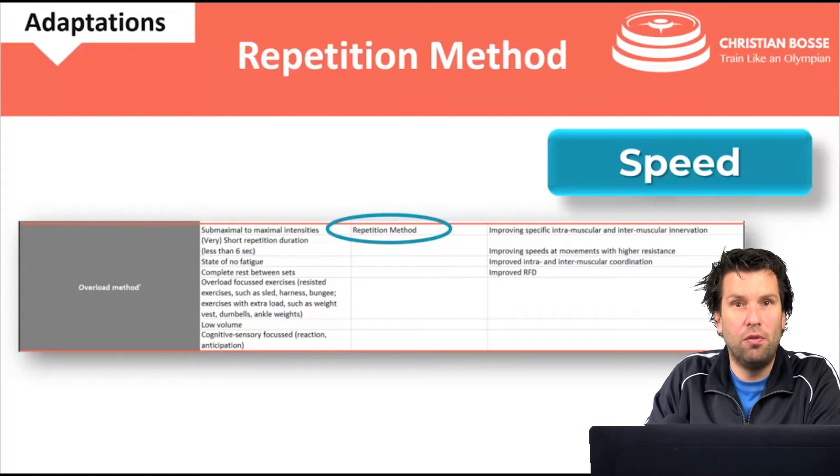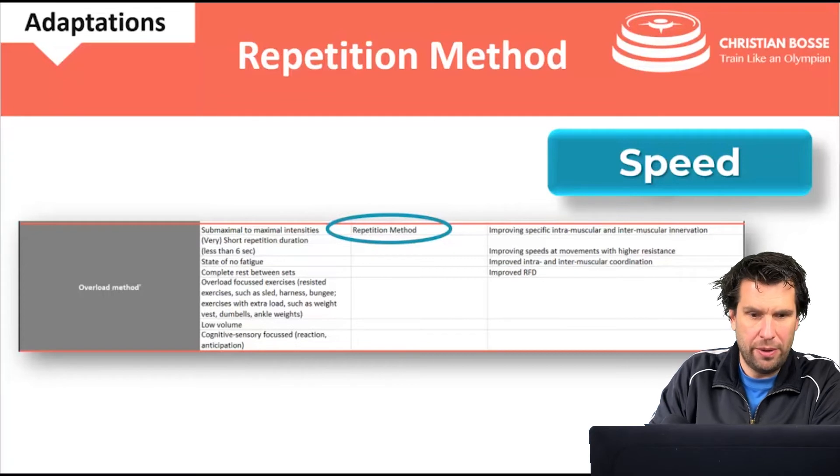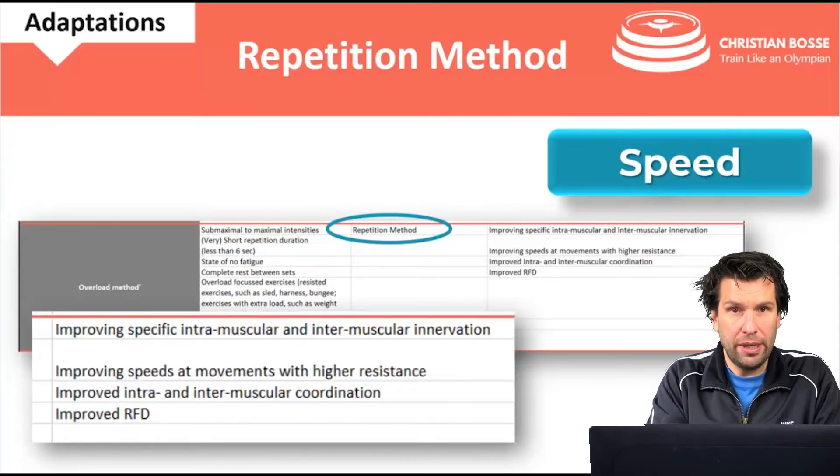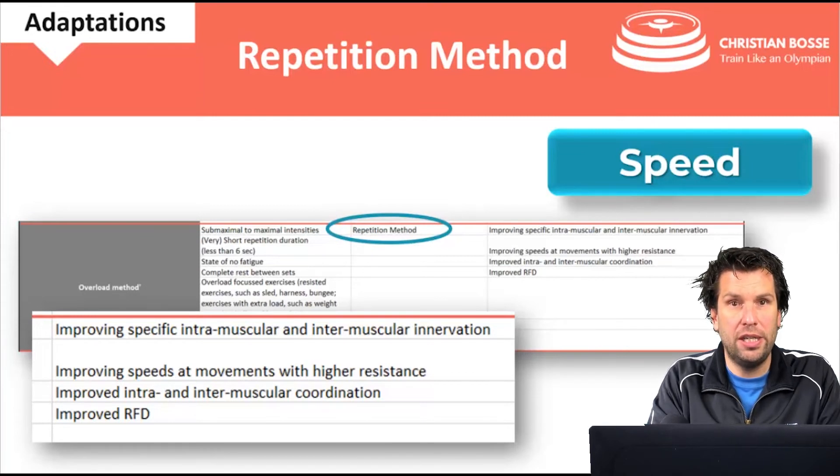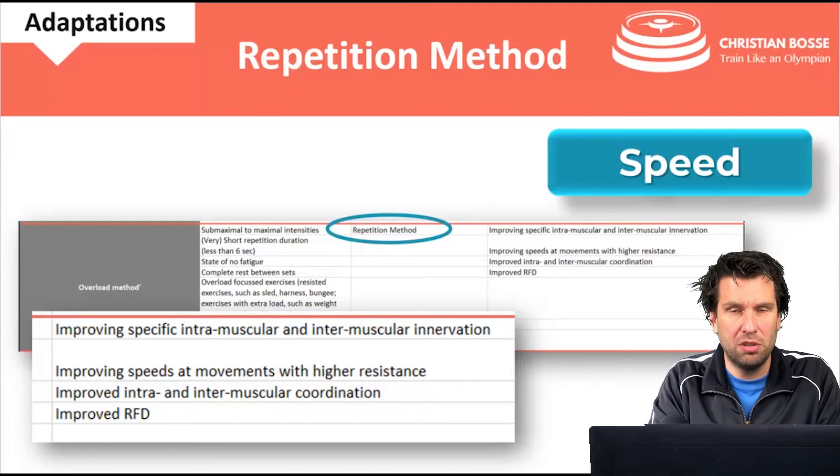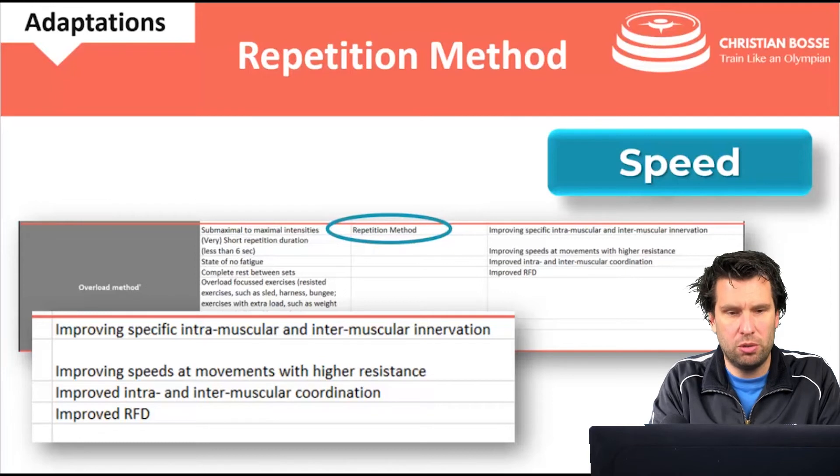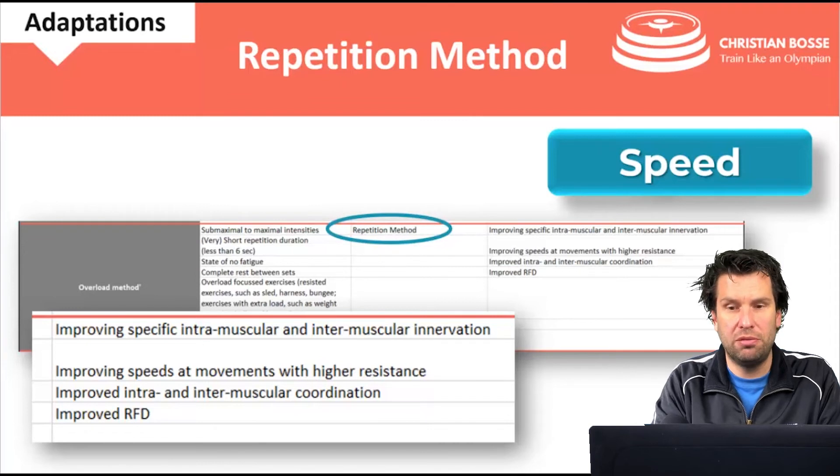Another example, the overload method, so uphill sprints, resisted sprints. The repetition method is the method of choice. And adaptations here could be improving intra and intermuscular innovation. So intramuscular recruitment of motor units, firing frequency, intermuscular synchronization of motor units. Improving speeds at higher resistance is another adaptation. Improved intra and intermuscular coordination and improved rate of force development.